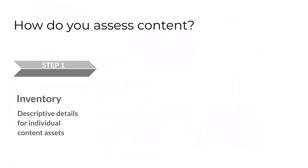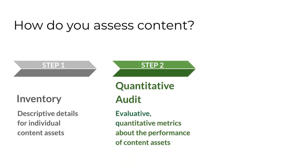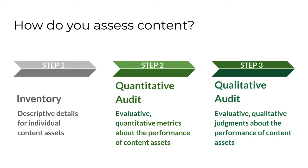The very first step in assessing content is to conduct an inventory — an organized list of every content asset along with whatever details you have about each asset: who owns it, when was it last updated. The inventory is purely descriptive. The second step is to conduct a quantitative audit of the inventoried assets, adding quantitative performance metrics like page views or counts by category. The third step is to conduct a qualitative audit, adding qualitative performance metrics like how well a page meets user needs or how important an asset is given current business priorities. The second and third steps are evaluative rather than simply descriptive.